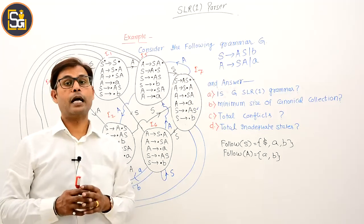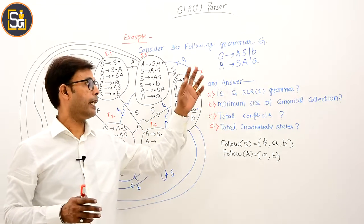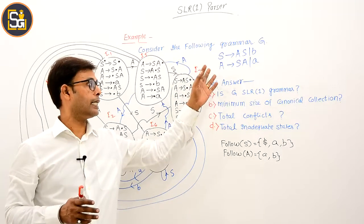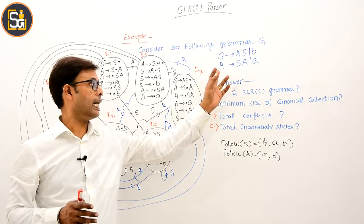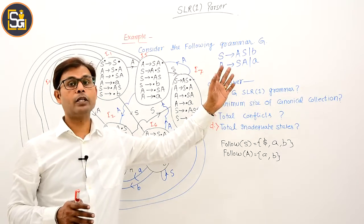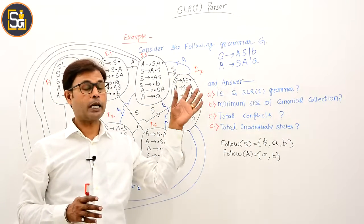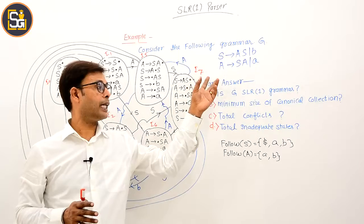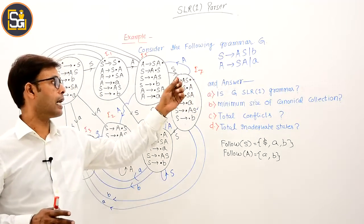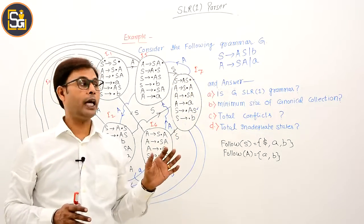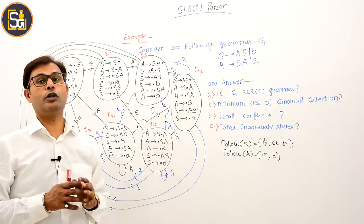Consider the grammar: S derives AS, S derives B, A derives SA, and A derives A. The non-terminals are capital S and capital A, and the terminals are lowercase a and b. Answer the following questions about this grammar.